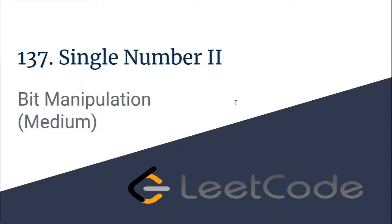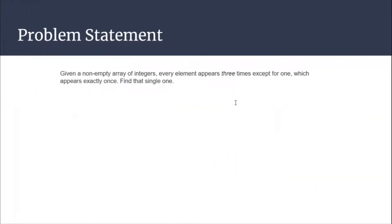Hello guys, this is Code and Code, and this is a video editorial for the problem Single Number II, taken from LeetCode. The problem is from the bit manipulation category and is a medium one. We are given a non-empty array of integers where each number appears exactly three times except one — a single integer — and we have to find which integer appears exactly one time.